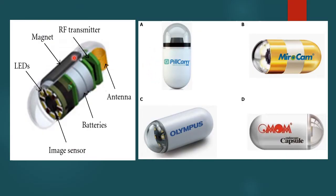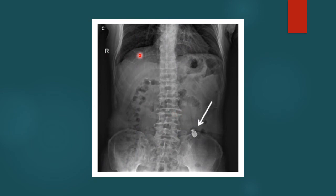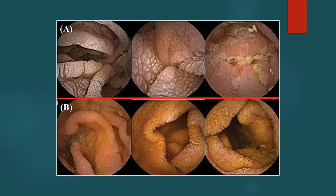These are the various components of the capsule: image sensor, batteries, antenna, transmitter, radio frequency transmitter, magnetic strip, and LED lights. These are the various marketed capsule models available today. After the patient ingests the capsule, it travels throughout the intestine, ending in the descending colon before being excreted. The images transmitted by the capsule to the recording device must be analyzed by experts to diagnose any abnormalities.